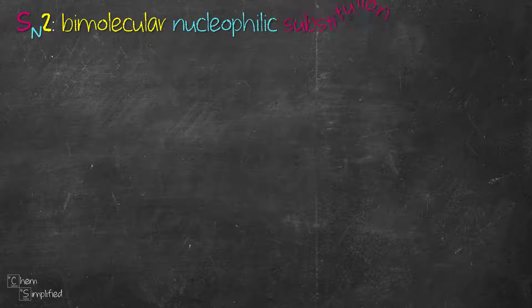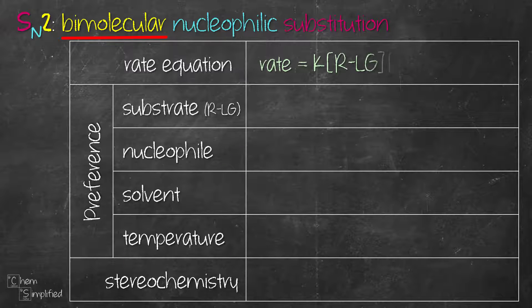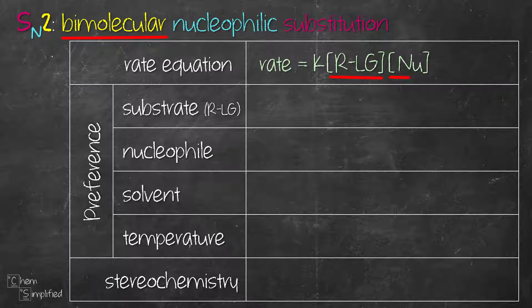SN2 stands for bimolecular nucleophilic substitution. There are two components involved in a nucleophilic substitution reaction. One is a substrate that has an alkyl group attached to a leaving group (R-LG). Another one is the nucleophile. SN2 is bimolecular because the rate of the reaction depends on both the concentration of the substrate and the concentration of the nucleophile. That makes SN2 a second-order reaction.